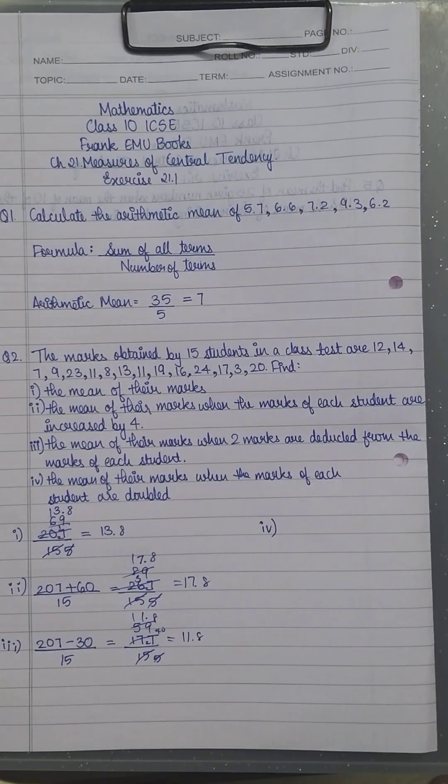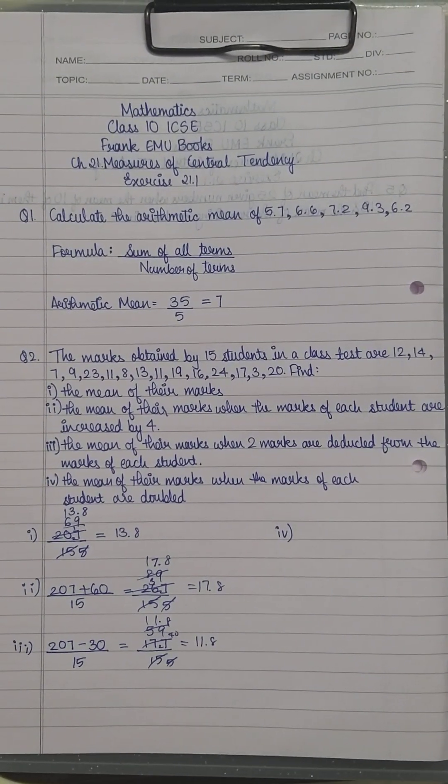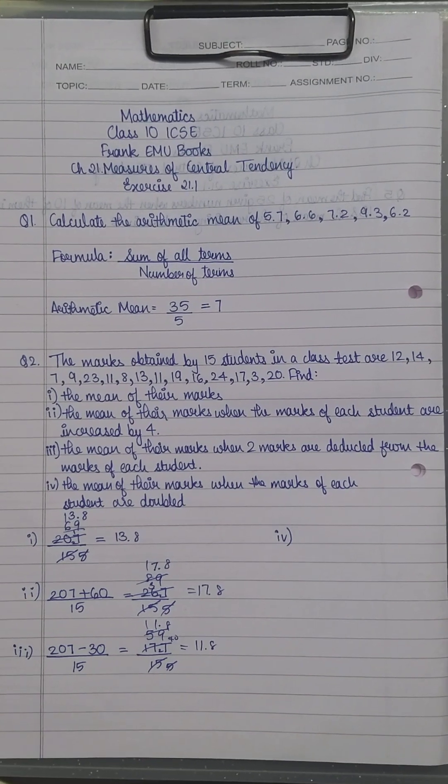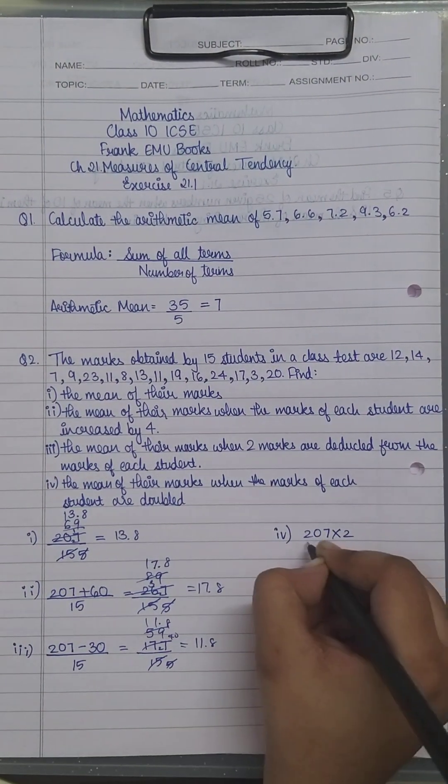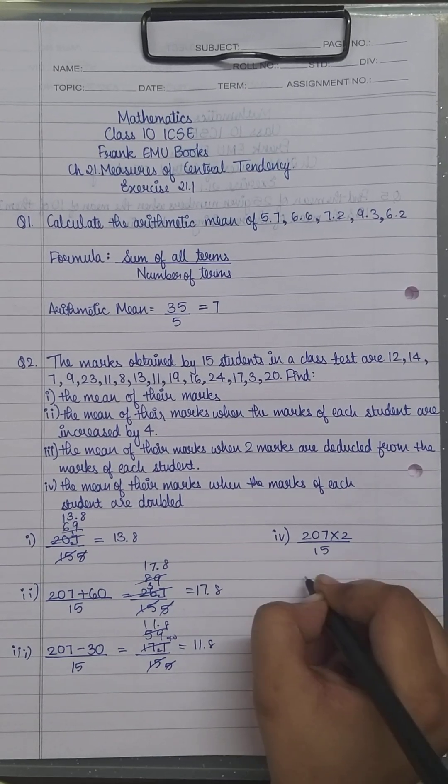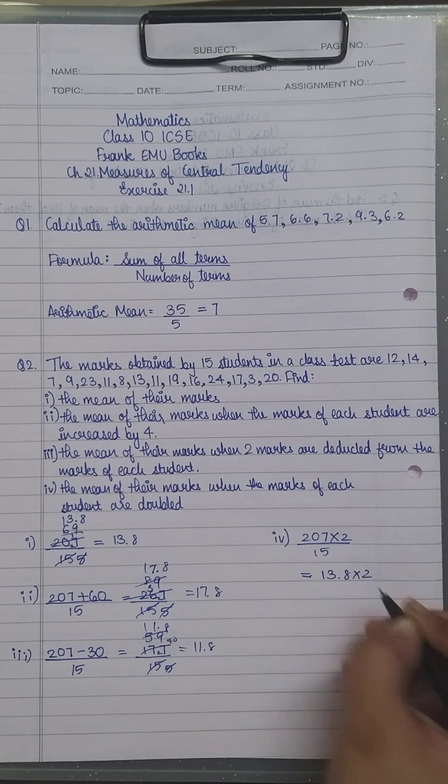The fourth sub-question: find the mean when the marks of each student are doubled. If the marks are doubled, then the sum also doubles. So you have 207×2 upon 15. You know the answer - it's 13.8×2.